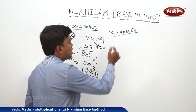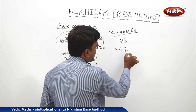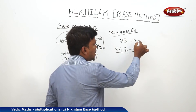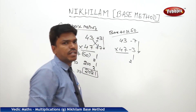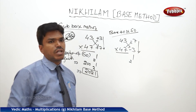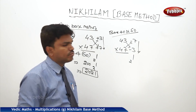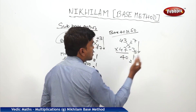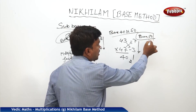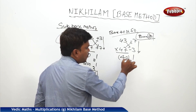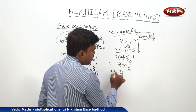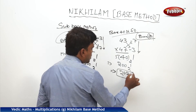The same for base 50 with 43 into 47. It is minus 7 and minus 3. Minus into minus is plus: 7 times 3 is 21 — drop 1, carry 2. Either 43 minus 3 or 47 minus 7, both give 40. Multiply 40 by the factor 5 (tens digit of base 50): 40 times 5 is 200. Plus carry 2 is 202, and 1 as it is. So my answer is 2021 — the same in both ways.